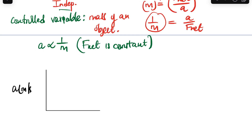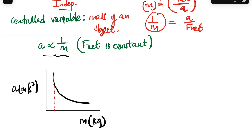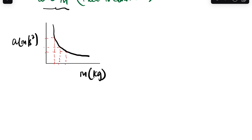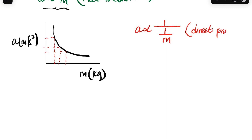Since acceleration and mass are inversely proportional, the graph is a curve — not a straight line. If we have a small mass, the acceleration is large; as the mass increases, the acceleration decreases. This inverse proportionality produces a hyperbolic curve. We can also plot acceleration against the inverse of mass to linearize this relationship, which gives a direct proportionality.